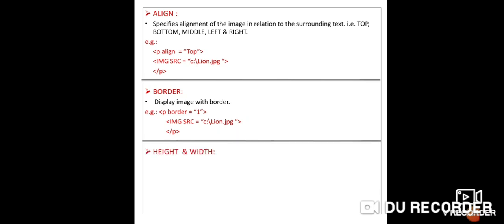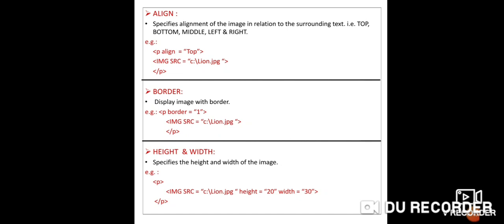The next attributes are height and width. Suppose you want to change the height and width of the image — use the height and width attributes. For example: P, then IMG SRC="C:\lion.jpg", then height="20" width="30". The height of lion.jpg will be 20 and the width will be 30. Then end of paragraph tag.